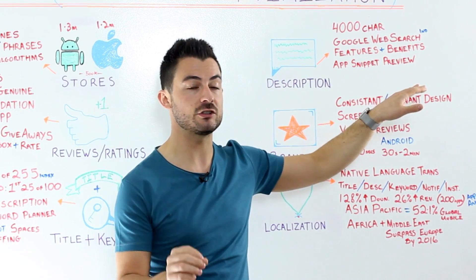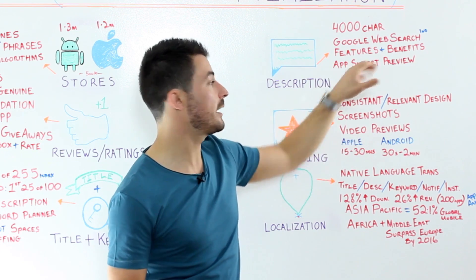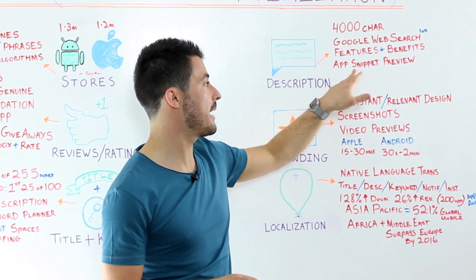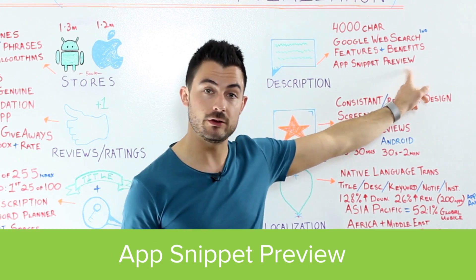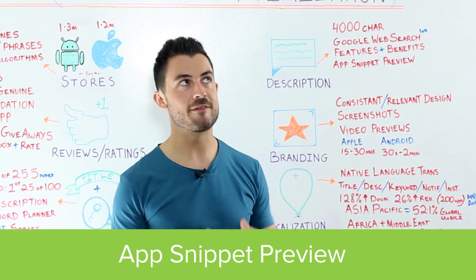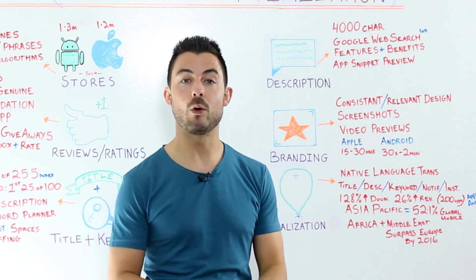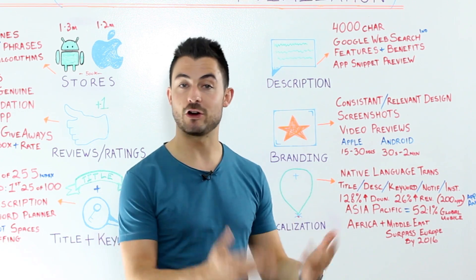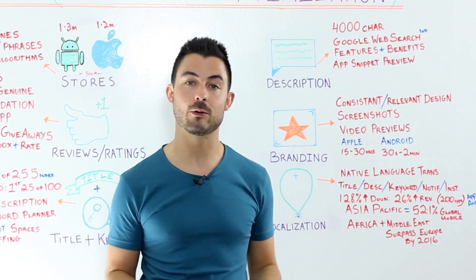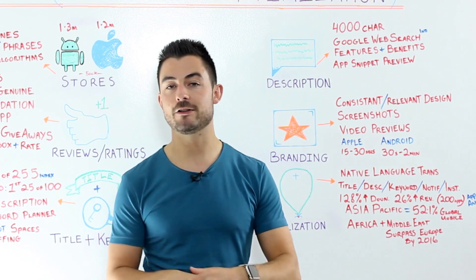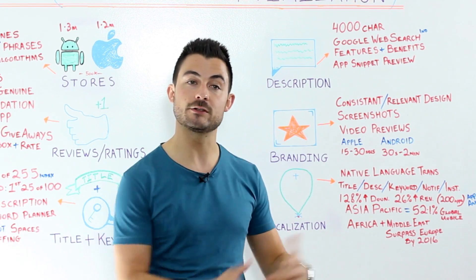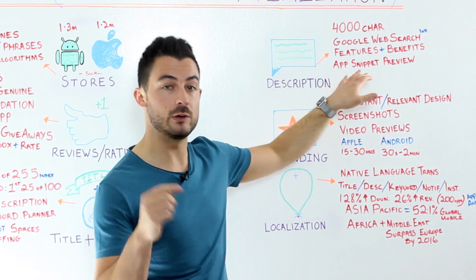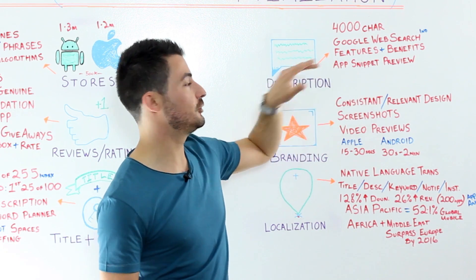There's a tool called the App Snippet Preview that lets you mock up or simulate what your description screen will look like on the App Store. You can upload your icon, screenshots, and keywords to preview exactly how a real user would see your app when considering downloading it. We'll leave a link below the video — it's really worth using before you publish.